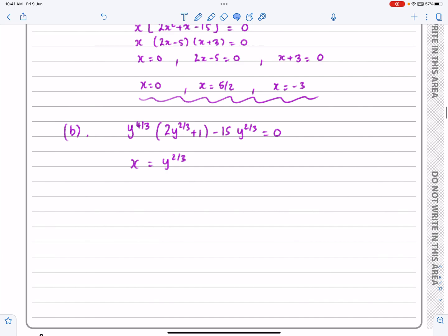Right, okay, well that means where I've got x = 0, I've now got y^(2/3) = 0 for that one there. I've got y^(2/3) = 5/2. And I've got y^(2/3) = -3.